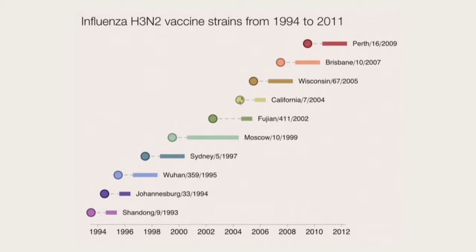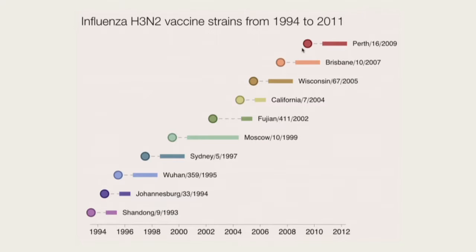Basically every year, folks need to get together at the WHO and decide: does an update need to occur? That's kind of the first really big question. And then if an update needs to occur, which strain do we want to put into the vaccine? I'm going to be approaching this question from an evolutionary perspective.